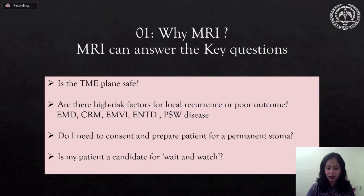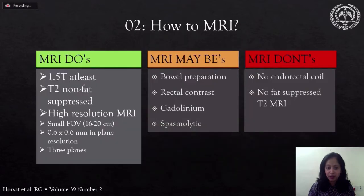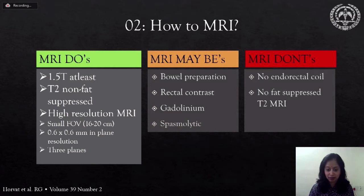Why MRI? MRI can potentially answer all the key questions the surgeon is confronted with in a patient with rectal cancer. The most important thing in performing MRI is to use at least a 1.5 tesla magnet. The mainstay of MRI in rectal cancer lies in T2 high resolution images acquired in axial, coronal, and sagittal planes. Bowel preparation, rectal contrast, gadolinium, and spasmolytics are optional and we don't use them in our center.